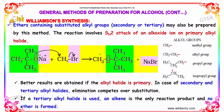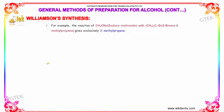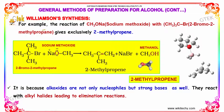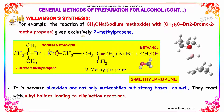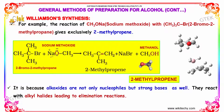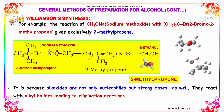Better results are obtained if the alkyl halide is primary. In the case of secondary and tertiary alkyl halides, elimination competes over substitution. If a tertiary alkyl halide is used, an alkane is the only product and no ether is formed. For example, the reaction of sodium methoxide with 2-bromo-2-methylpropane gives exclusively 2-methylpropane, where NaBr is formed as a byproduct.